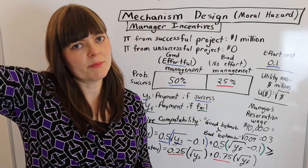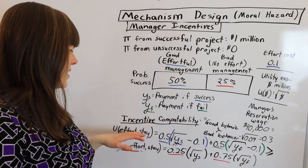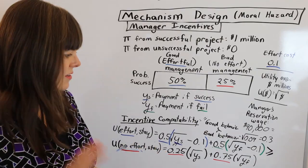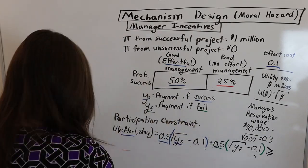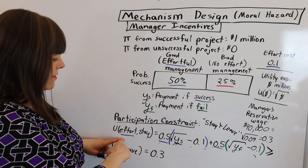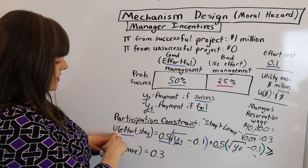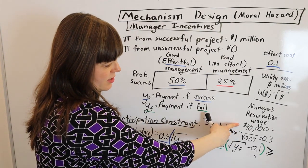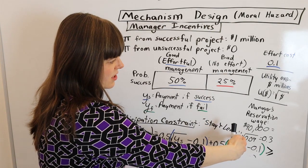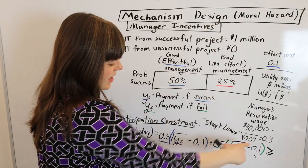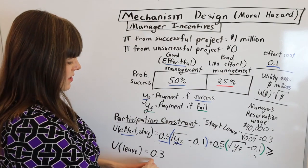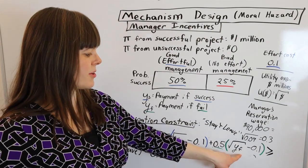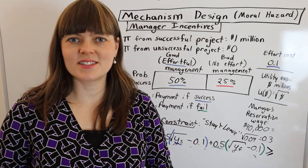Now we need to make sure the manager doesn't want to leave and earn the $90,000 they could make somewhere else. The participation constraint forces the package we want — effort and staying — to be greater than or equal to the utility from leaving the company. We were given the reservation wage of $90,000, which plugged into our utility function where money is in millions gives 0.3. So the utility of the situation we're trying to force must be greater than or equal to 0.3. Those two inequalities together determine how much the CEO should be paid if successful and how much if they fail.